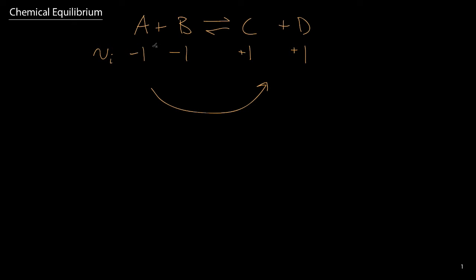If we look at it initially, we have four different distinct species: A, B, C, and D. But if you recall, they are all linked together by a single common variable and that is the extent of reaction.